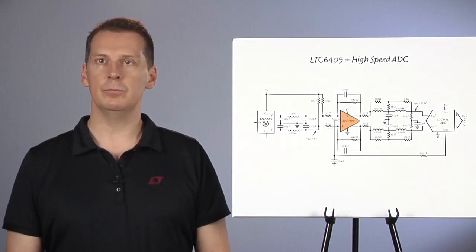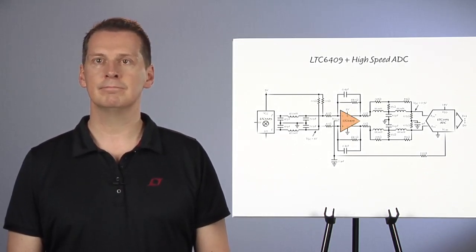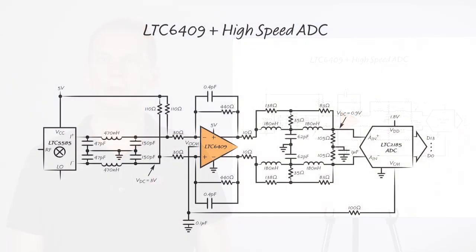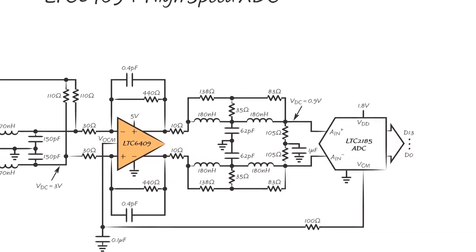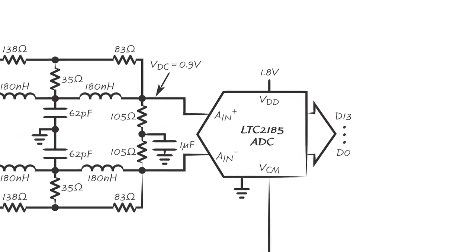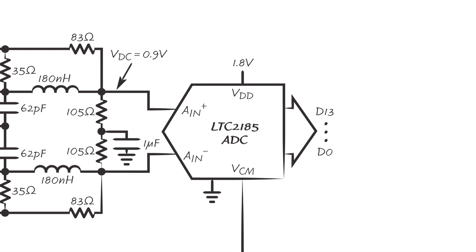Let's look at an example where this is important. This schematic shows a high-speed ADC, the LTC2185, 16-bit, low-power, 125 Mbps ADC. This ADC is powered from a 1.8V supply, and requires that the input signals are differential, and centered on a common mode voltage of just 0.9V.